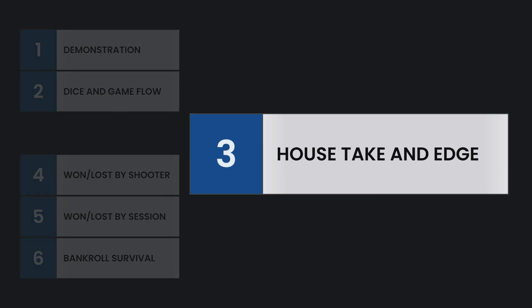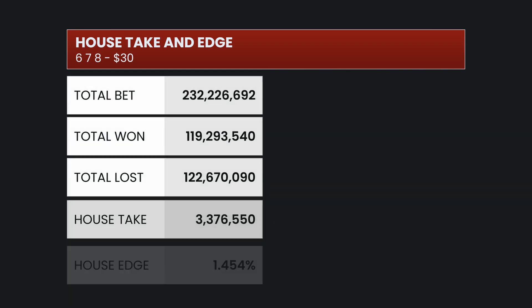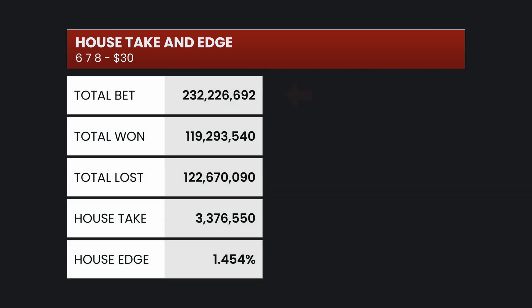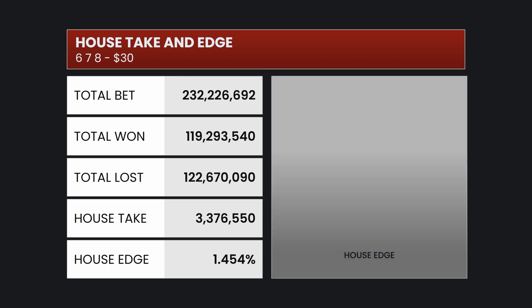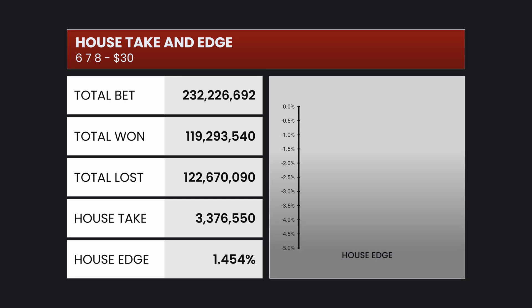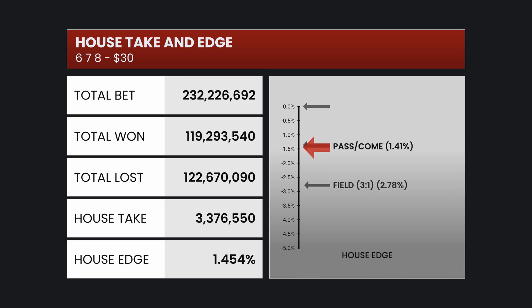Now let's look at the house take and the house edge. The total bet overall was $232 million, with $119 million won and $122 million lost. The difference between those two is a house take of $3.3 million, which is an overall house edge of 1.454%. Here you can see that percentage compared to some of the other common bets on the craps table.